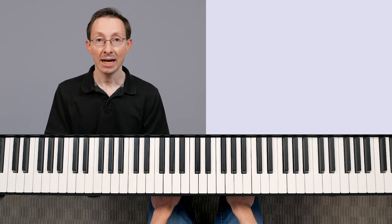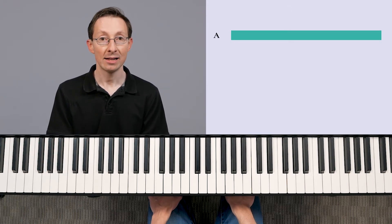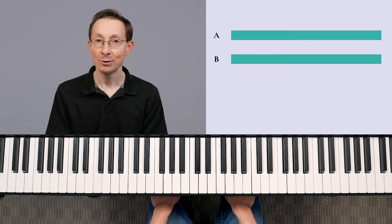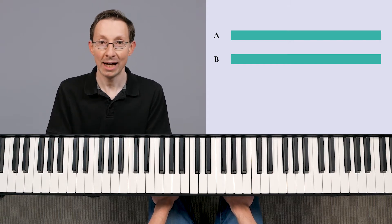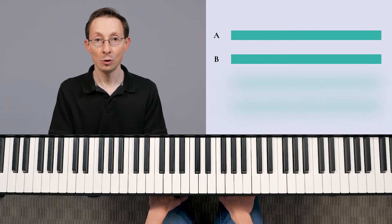Basically what we're looking at is an AABB form, and each tune has an A section and a B section. There are some tunes that have more than two sections, and so you might have a C section or a D section, but for right now we're just going to focus on two-part tunes.